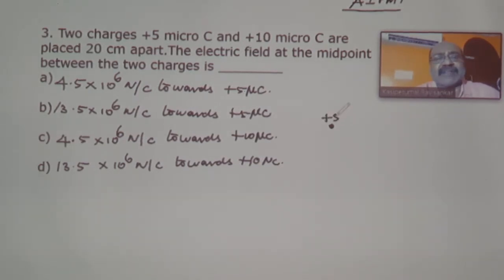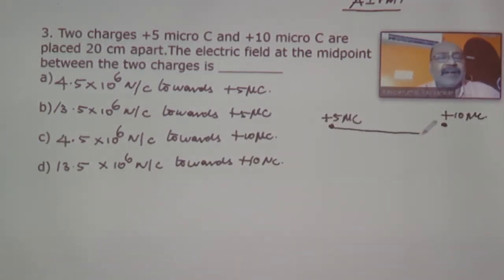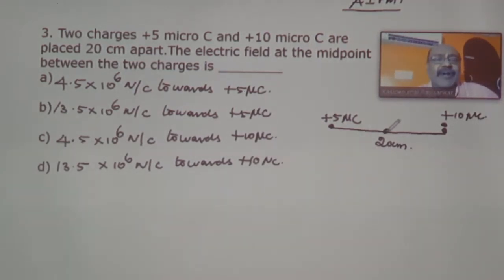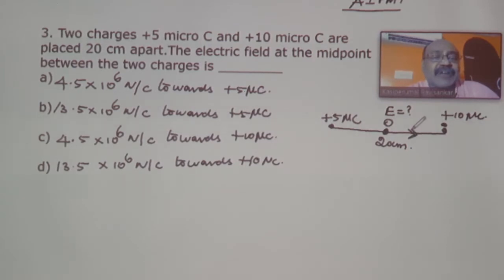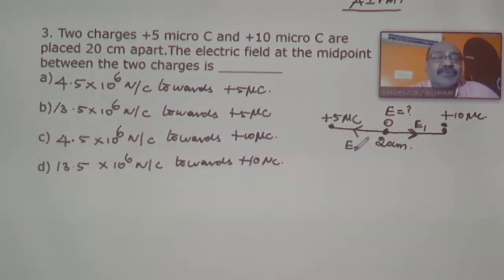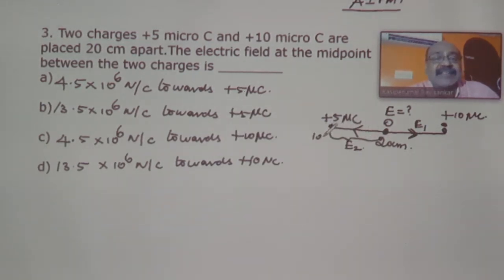Let us draw a diagram. We have two point charges: plus 5 micro coulomb and plus 10 micro coulomb, separated by a distance of 20 centimeters. We take O as the midpoint. Due to plus 5 micro coulomb, the electrical field at O acts away from the charge, called E1. Due to plus 10 micro coulomb, the field acts in the opposite direction, called E2. Each half-distance is 10 centimeters.